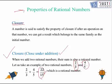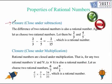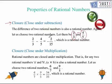Now we move ahead and we are going to check whether closure property holds under subtraction or not. We again take an example of 2 over 3 and 4 over 5. If we subtract both of them we get minus 2 over 15, which is a rational number. So we can say that closure property holds under subtraction as well.